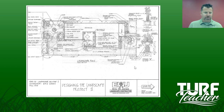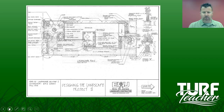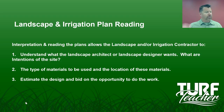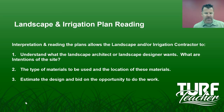I'm going to put this plan up as a PDF — you'll be able to download it, print it. If you've got a large format printer, you can print it on 11 by 17. Landscape and Irrigation Plan Reading is basically about interpreting and reading plans to allow the landscape or irrigation contractor to understand what the landscape architect or designer wants — what are the intentions of the site? Sometimes we're going to question what the designer was doing. That's our nature — we're in the field every day, we see problems, and we see easy ways to fix them.